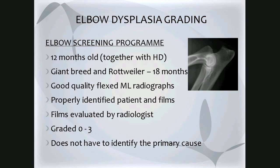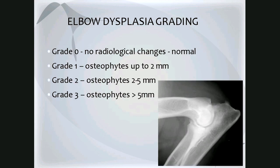For elbow dysplasia grading, radiographs are taken at 12 months of age, usually together with hip dysplasia radiographs. Giant breeds and Rottweilers are assessed at 18 months. A single good quality flexed medial lateral radiograph is required, properly identified with the patient's microchip or tattoo number embedded in the image, and films are evaluated by a specialist veterinary radiologist. The images are graded from 0 to 3, and grading does not need to identify the primary cause — it is often based on the degree of arthrosis present.